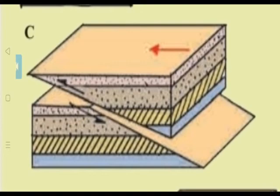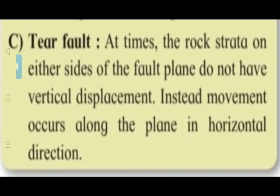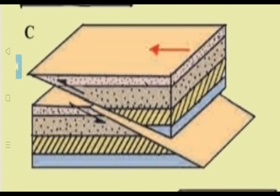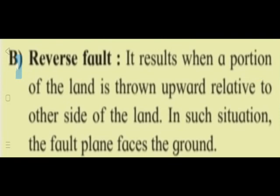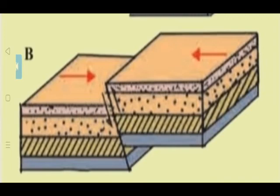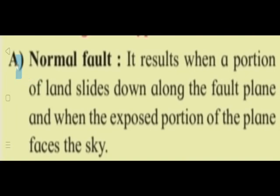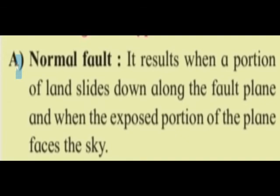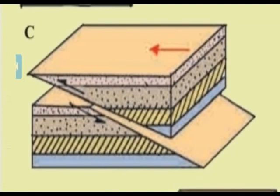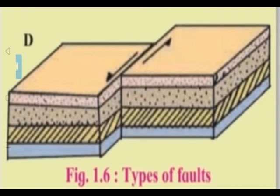Diagram C - tear fault: the rock strata on either side of the fault plane have no vertical displacement. Instead, movement occurs along the plane in the horizontal direction. In reverse fault, there is upward direction and the fault plane faces the ground. In normal fault, it faces the sky.